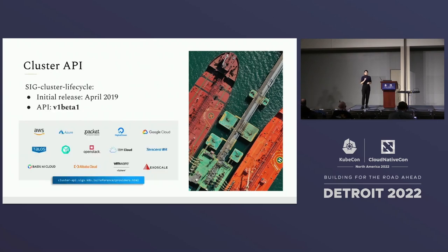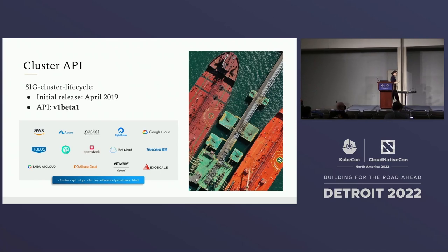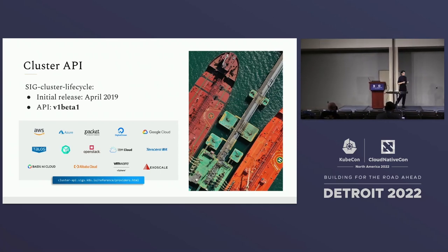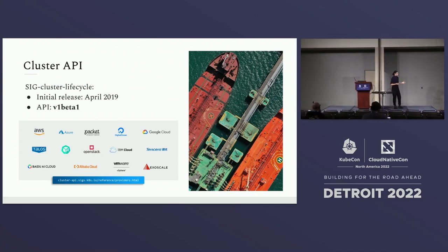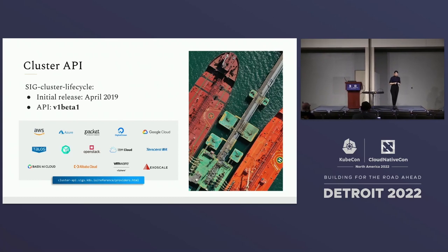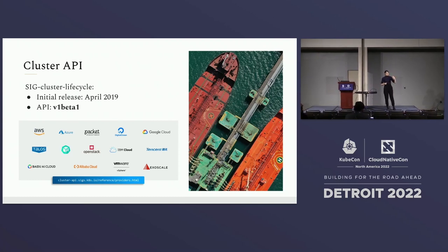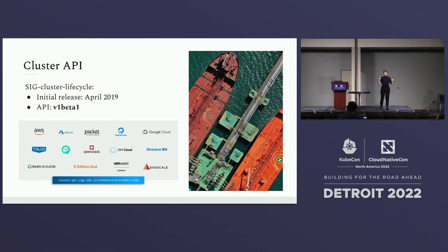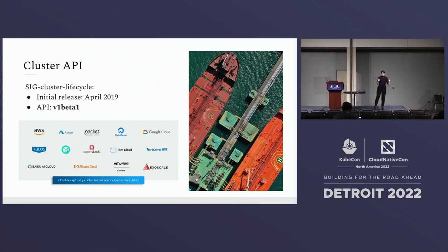Cluster API, also referred to as Cluster Lifecycle, had its first initial release in April 2019. Since then it has had multiple releases, and currently it's at V1 Beta 1 endpoint, which was a very big milestone for the team this year. It integrates with 16 cloud providers actively collaborating with Cluster API.